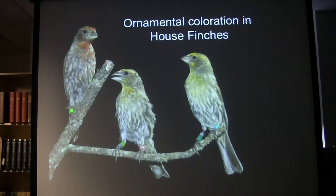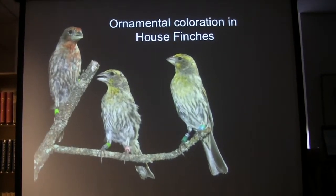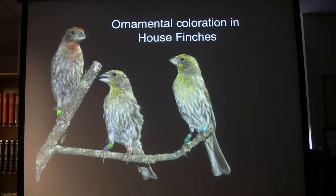I tackle this huge and challenging question using a very simple system. An important way to make headway on a challenging question is to not start with the most complicated. As much as I love painted buntings and appreciate their ornamentation, it's overwhelming — there's just too much going on. House finches are a much simpler system. It's a unidimensional, relatively simple ornamentation: colored patches in their body plumage that range from pale yellow to bright red. It's a classic sexually selected trait. Males have the ornamentation, females don't.